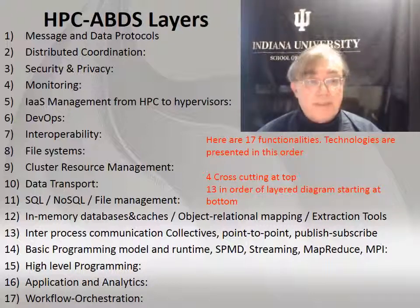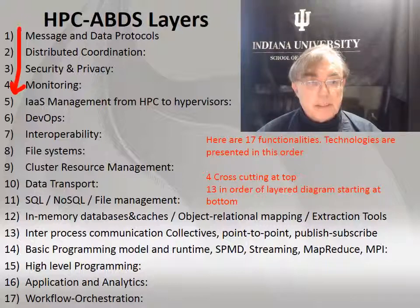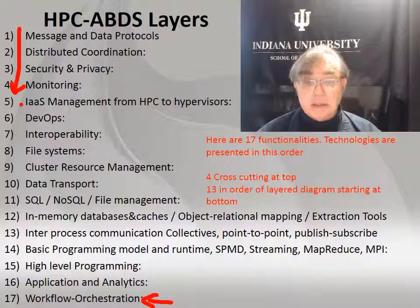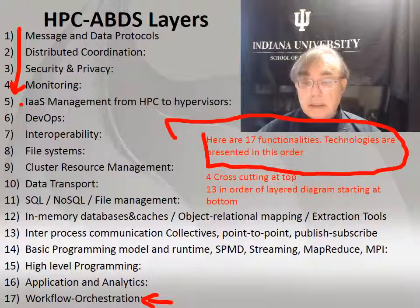Here are the levels or layers in detail. We have the 17 layers, and as I said, we're doing the first four here. The first four are the cross-cutting layers. Then we start at the bottom of the diagram with the infrastructure and go to the top, which is the workflow and orchestration level. We will use this particular slide as a divider between the layers of functionality.